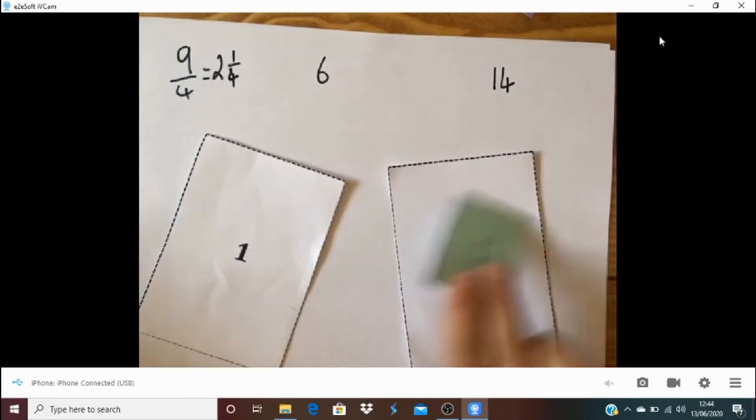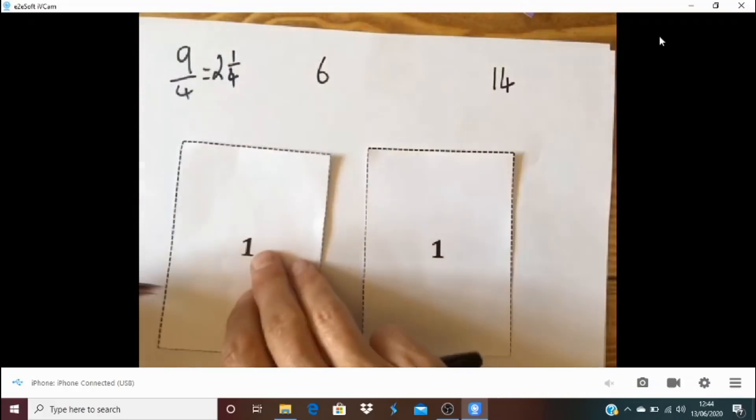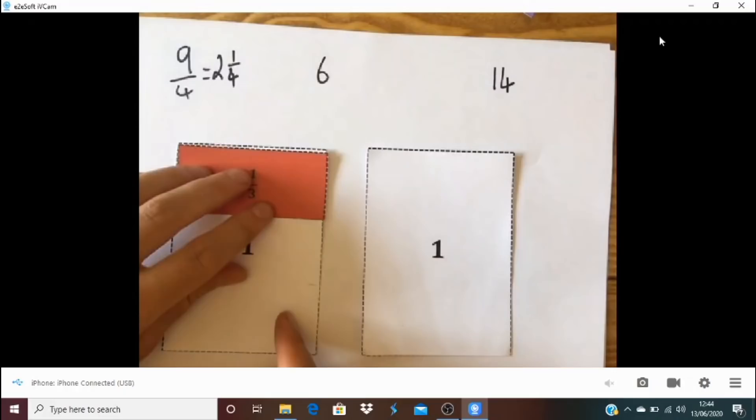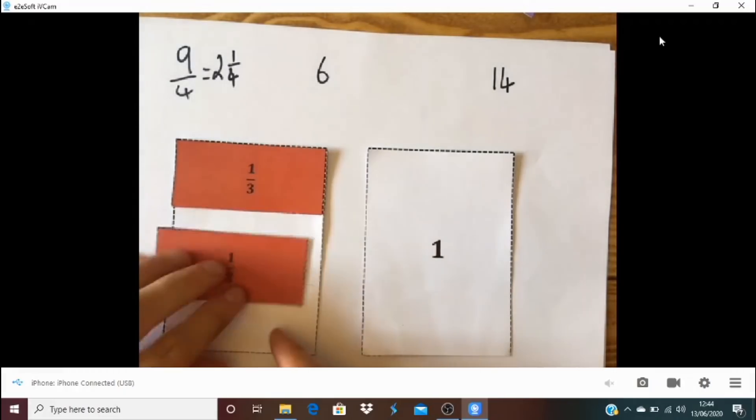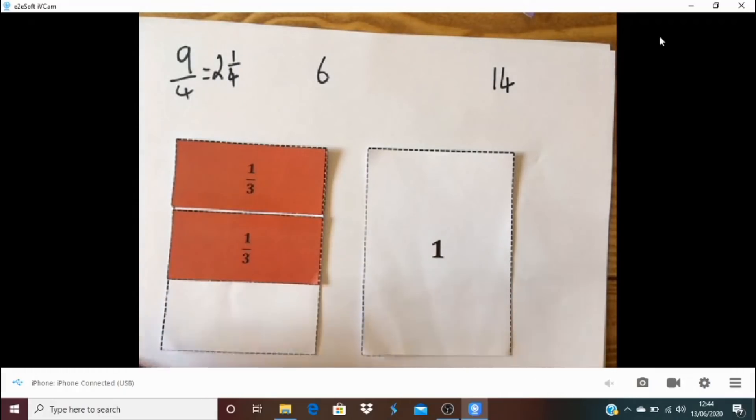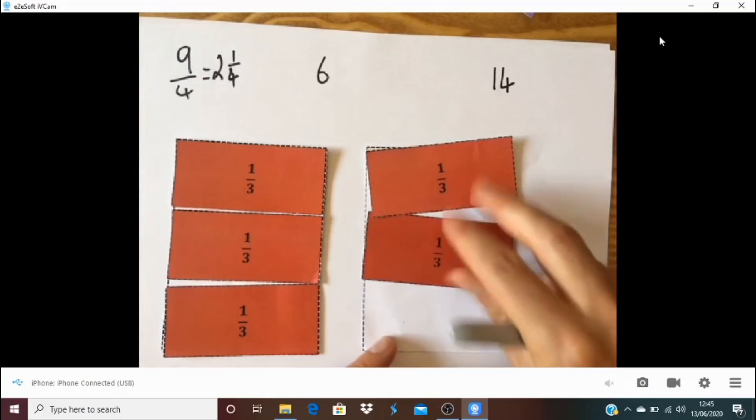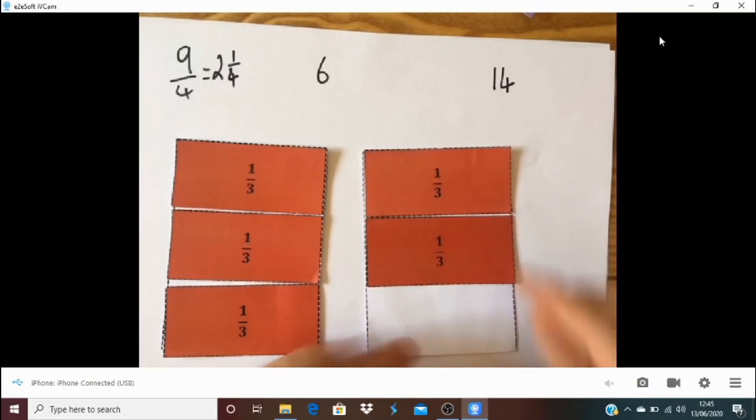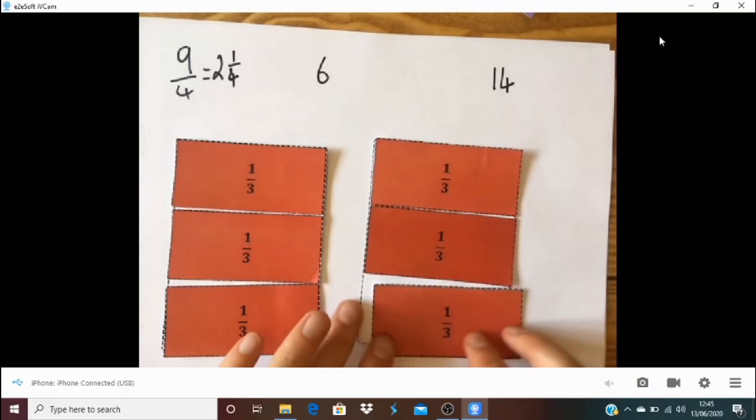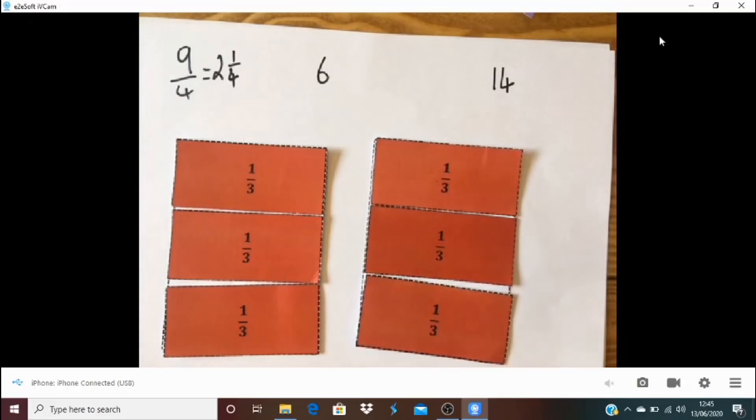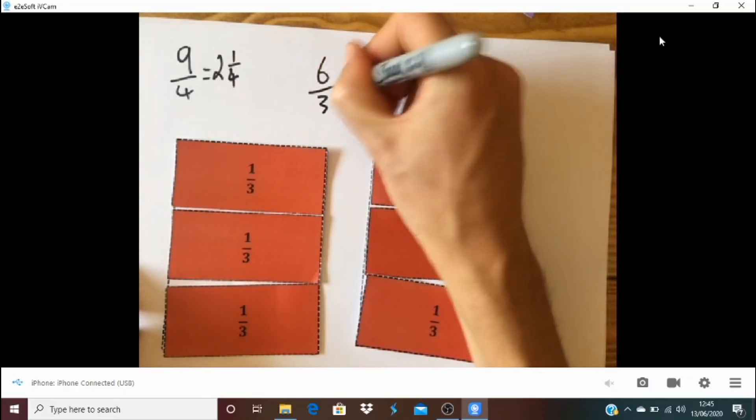So that's that one. Now what about 6 thirds? Well, I can see that on 1 I have got 3 thirds. So 6 thirds will be exactly, if I can line them up well, exactly 2. So 6 thirds is 2.